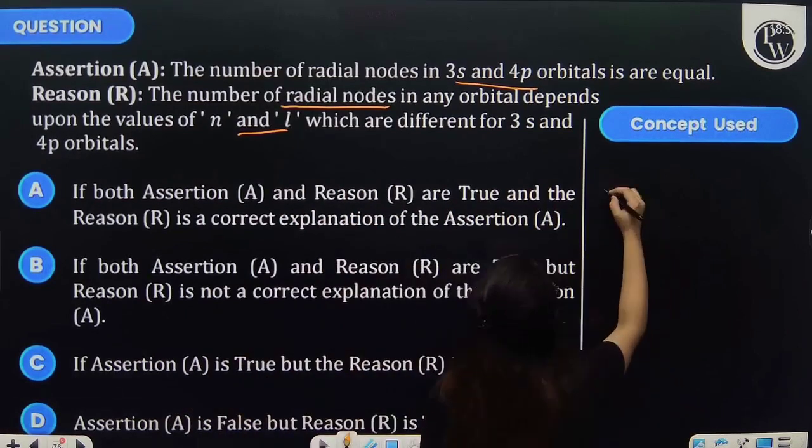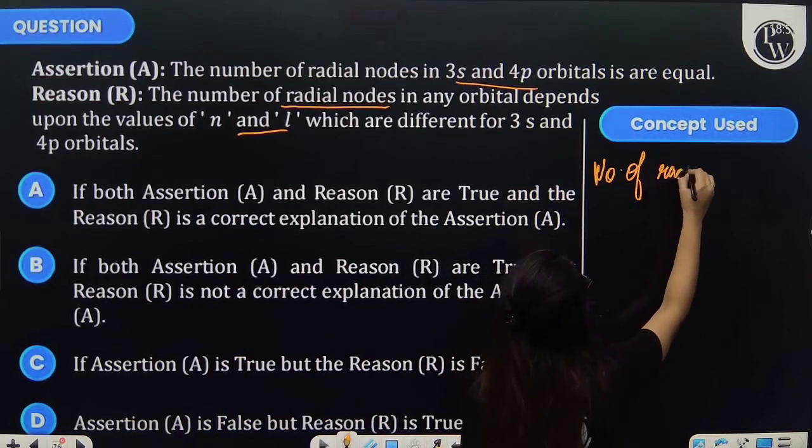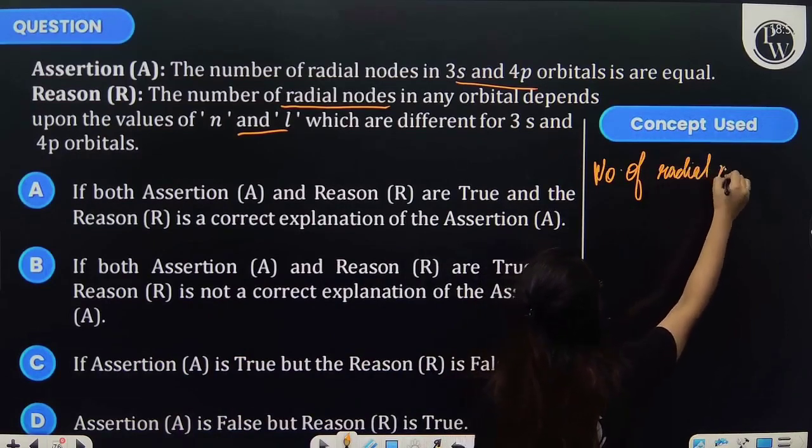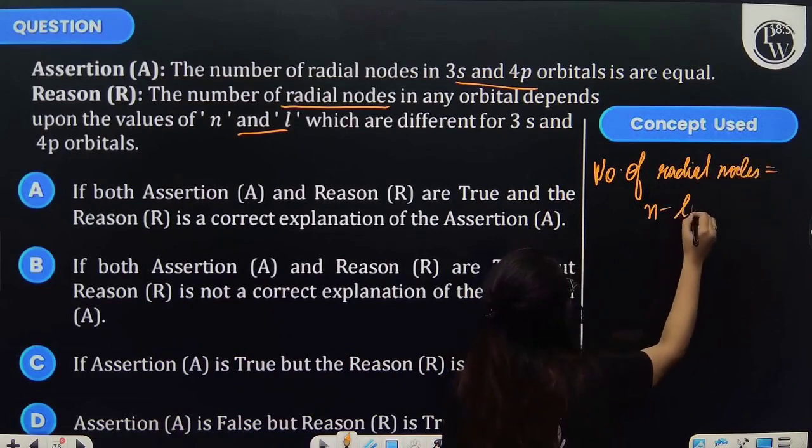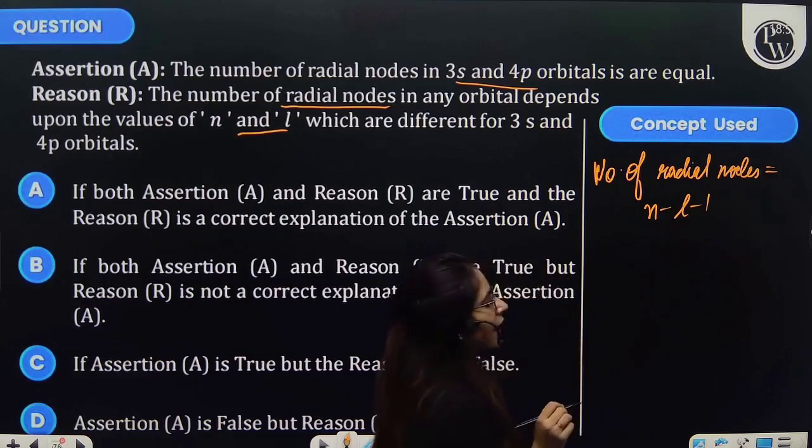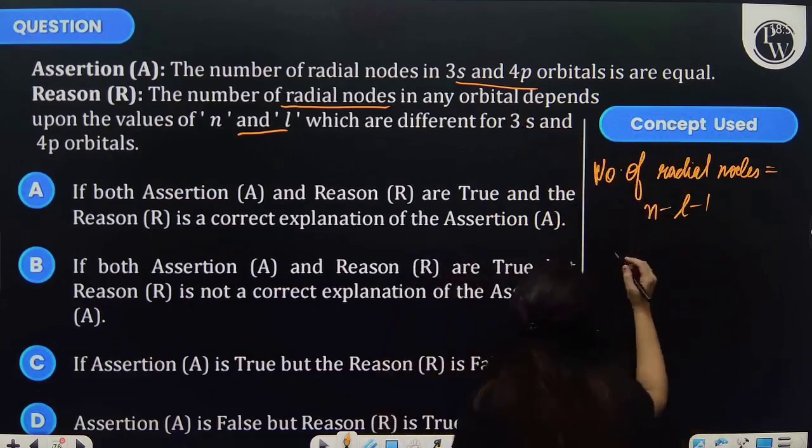Now as we know, the number of radial nodes is equal to n minus l minus 1. And if we calculate for these two orbitals, that is 3s and 4p...